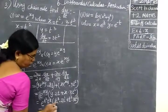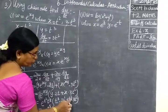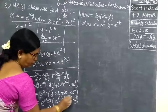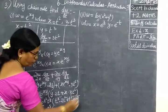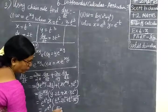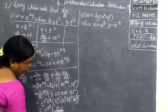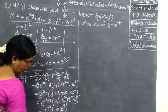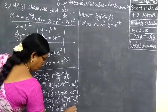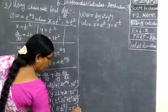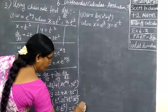Now, if you add the exponents: 3 plus 1 gives t to the power 4 contribution and 2 plus 2 gives another — combining both terms gives 5 e power t power 5. So the answer is 5t power 5 into e power t power 5.